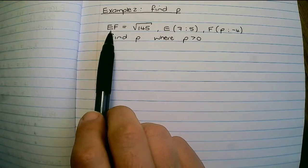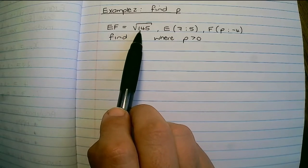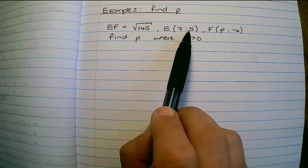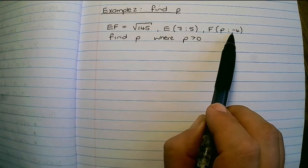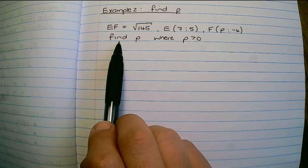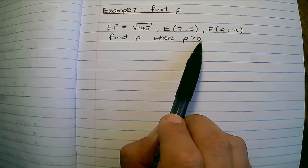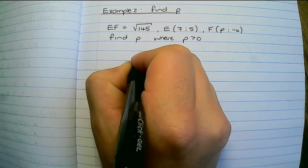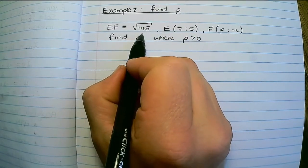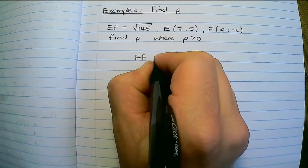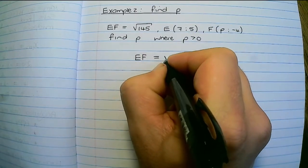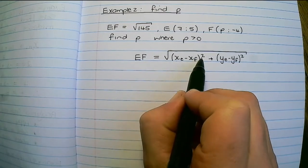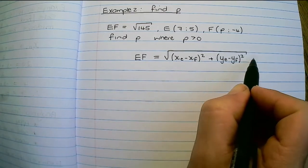In this example, EF equals the square root of 145. The coordinates of E are (7, 5) and the coordinates of F are (P, negative 4). The question is: find P, where P is greater than zero, meaning a positive value. We identify that we have a distance between two points and therefore we can apply the distance formula, which is the difference between x-values squared plus the difference between y-values squared.